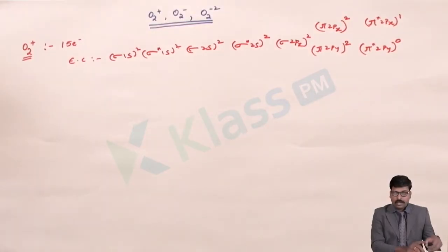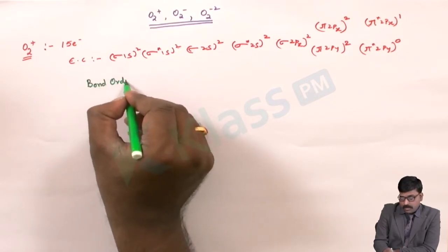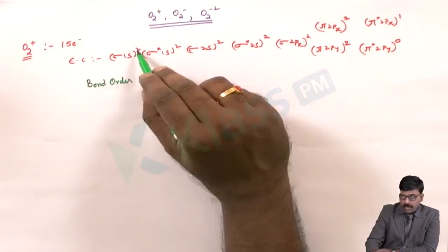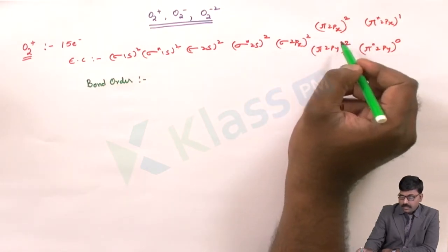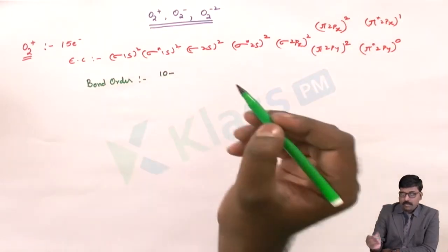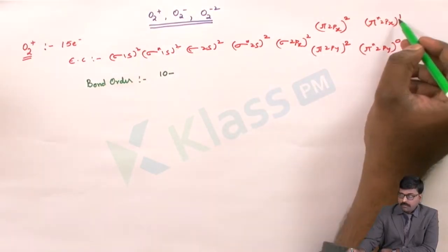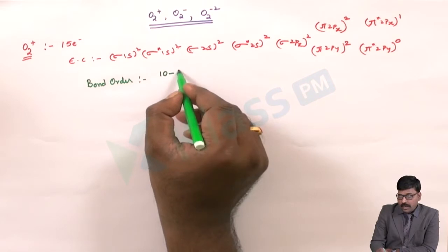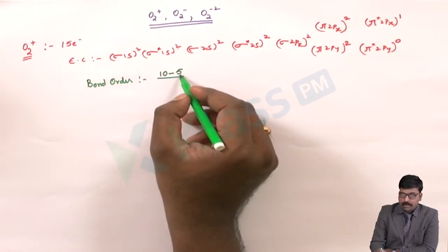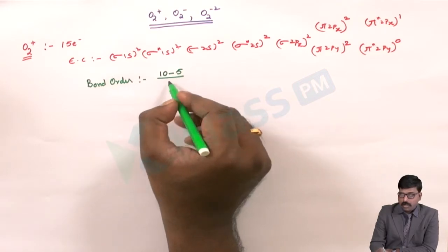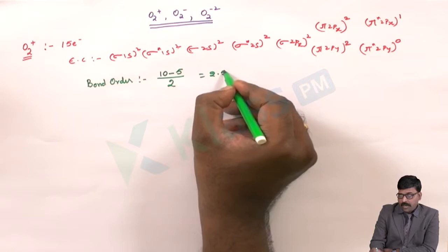For the bond order of O2 plus: there are 10 bonding electrons and 5 antibonding electrons, so the bond order is (10 minus 5) divided by 2, which equals 2.5.